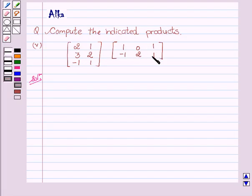Now let's start with the solution. Let A equal to matrix 2, 1, 3, 2, minus 1, 1, and B equal to matrix 1, 0, 1, minus 1, 2, 1.